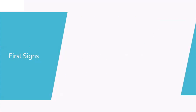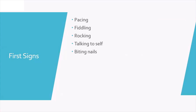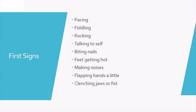The first signs of behaviour will differ for every child and can depend on the situation or how they are feeling. Some signs to look out for include pacing, fiddling, rocking, talking to themselves, biting their nails, their feet getting hot, making noises, flapping their hands, clenching jaws or fists, or becoming very still. This is not an exhaustive list — just some examples of what those first micro behaviours might look like. It might be useful to use the parent's observation sheet sent last week to explore and identify what those micro behaviours are for your child.